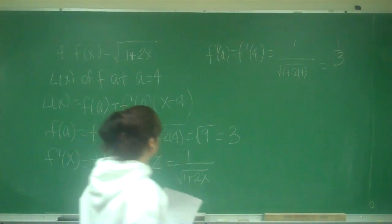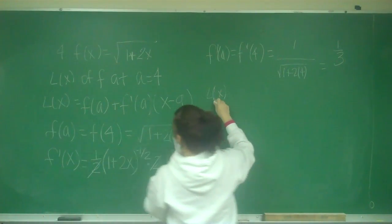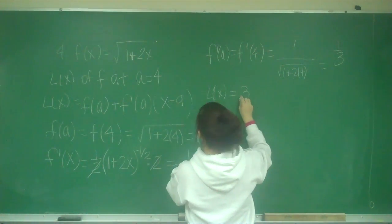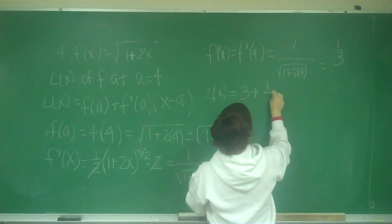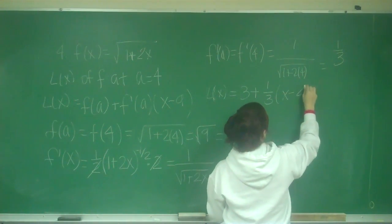So now we just plug everything into our formula. So L(x) is equal to 3 plus 1/3 times x minus a, which was 4.